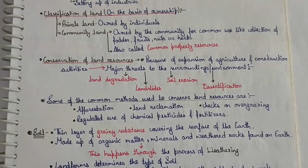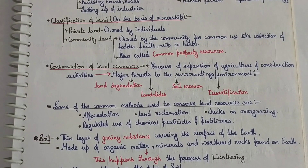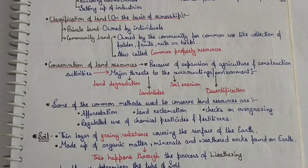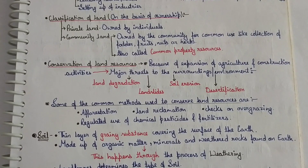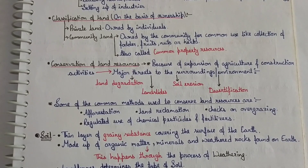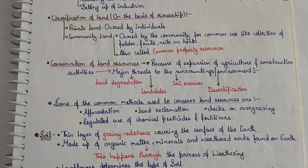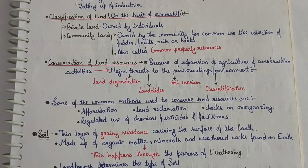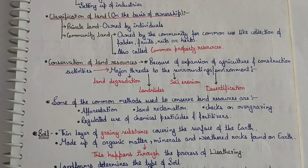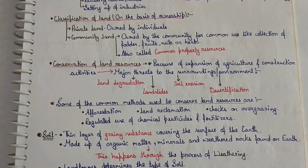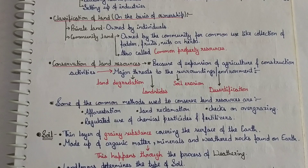The major threats are as follows. First, land degradation — the loss of natural fertility and productive capacity of the soil is called land degradation. Second, landslides. Third, soil erosion — soil erosion is the depletion of the uppermost layer of the soil. Fourth, desertification — desertification means when there is no crop production in our land, it is called desertification.